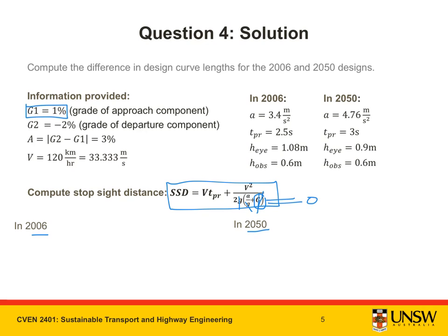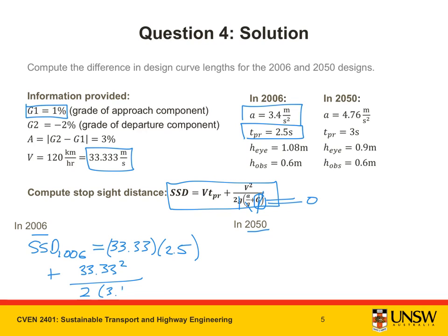We can substitute values in. So in 2006, SSD is equal to V, 33.33 times t_PR, 2.5, plus V squared, 33.33 squared over 2 times a. a is 3.4. Putting this into my calculator, I get 246.73 meters.